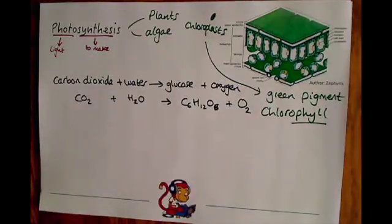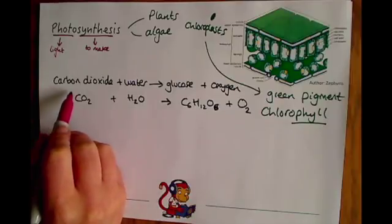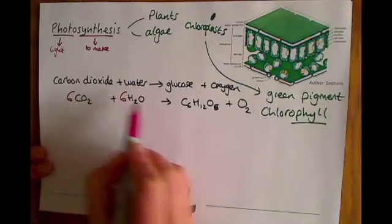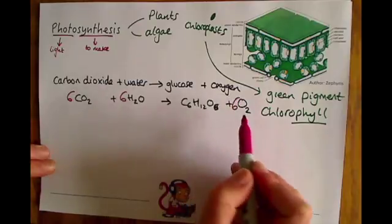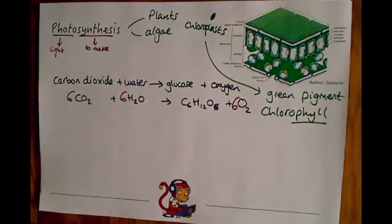Then that would need to be balanced. To balance it is quite a nice one to remember because you just put a six in front of everything except glucose, and that is the balanced equation for photosynthesis.